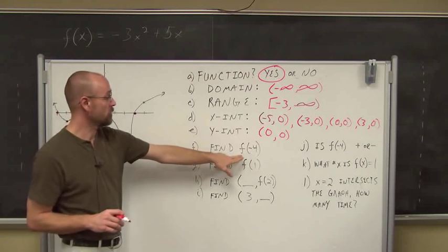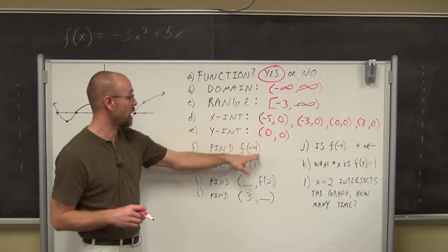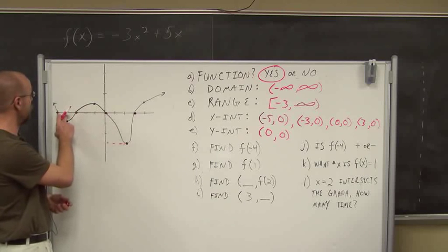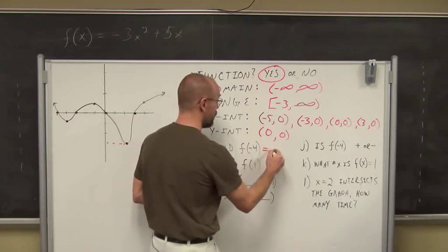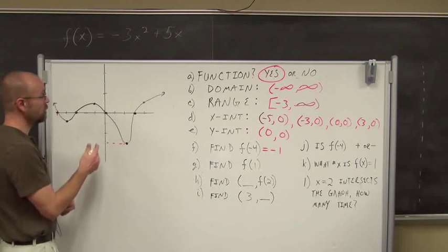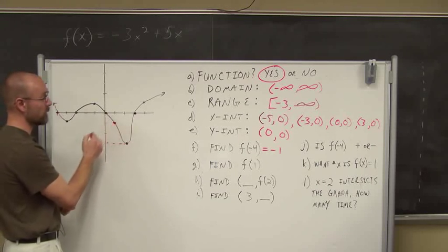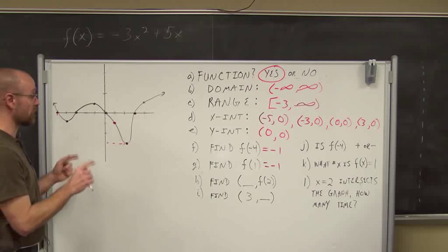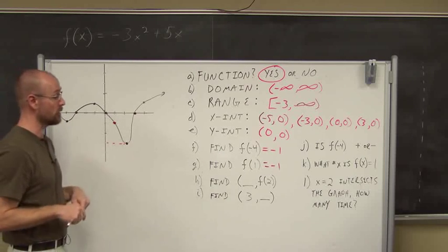Now we're asked to find f of negative 4, which is a review of function notation. It asks: what is the value of the function when x is negative 4? Going to negative 4 on the graph, the point looks to be at negative 1. So f of negative 4 equals negative 1. For f of 1, when x is 1, that point also looks like negative 1. So both x-values correspond to the same y-value — that's still a valid function.